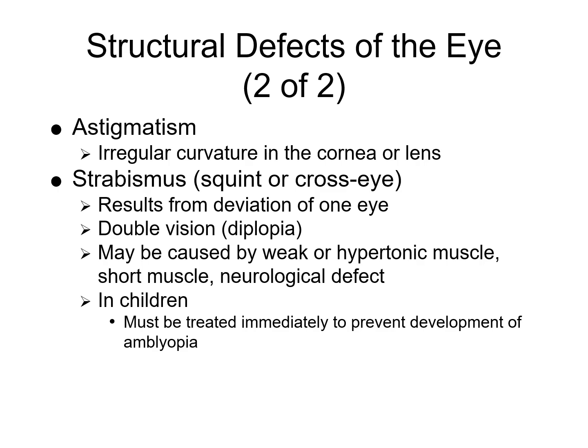Strabismus in children needs to be treated immediately because it can lead to the development of amblyopia. Amblyopia develops when the brain continually suppresses the image from the deviated eye; as a result, the eye doesn't receive the stimulation it needs to develop normally. Amblyopia is often called lazy eye, and treatment involves patching the strong eye to strengthen the weakened muscles, or using atropine drops in the good eye to make it blurry and force the lazy eye to work harder.